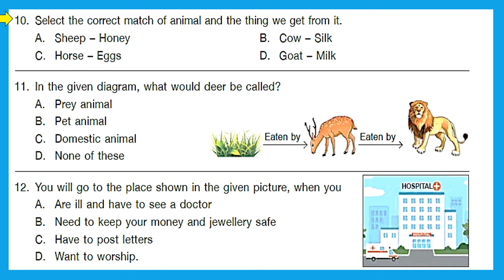Question 10: select the correct match of animal and what we get from it. Sheep and honey — wrong, honey is from honeybee. Cow and silk — wrong, silk is from silkworm. Horse and eggs — wrong, hen gives us eggs. Goat and milk — correct, because we do get milk from goat. Option D is the right answer.